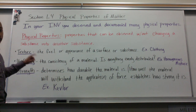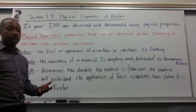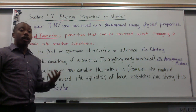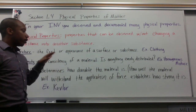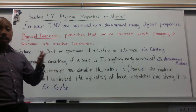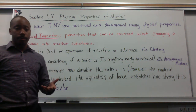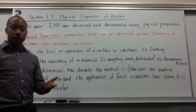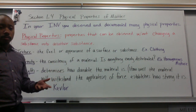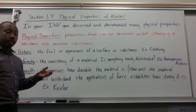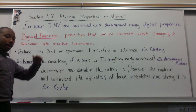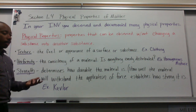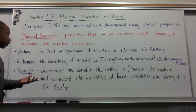The next physical property is uniformity. Uniformity is the consistency of a material. You might ask the question: is everything evenly distributed? For example, in a homogeneous mixture, everything is uniformly distributed — the consistency of the material is uniform throughout.